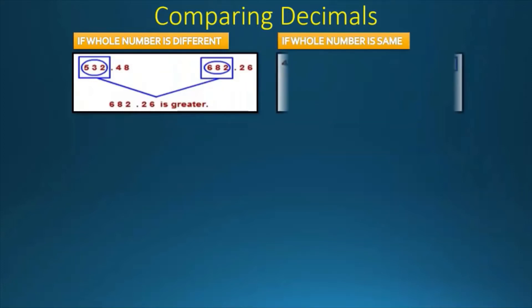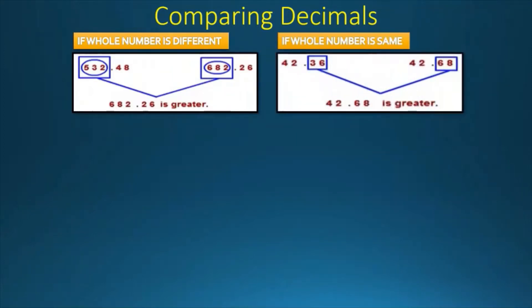If the whole number is same, we will take the decimal part. Whichever is greater will be greater. Over here, 42.68 is greater in decimal part, so it will be greater among the two.